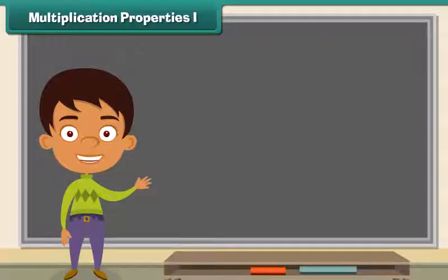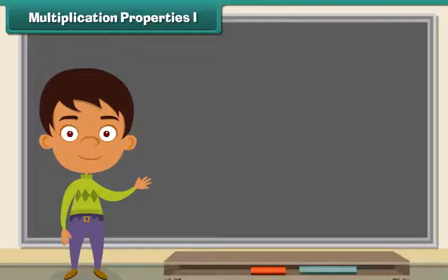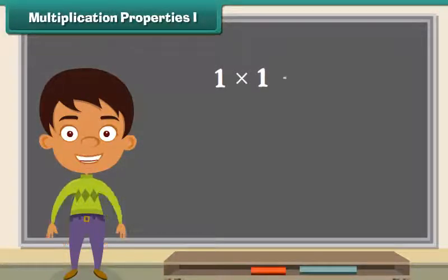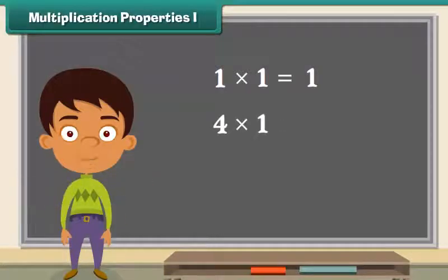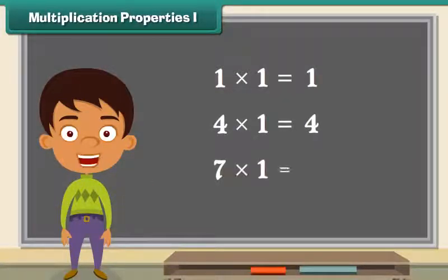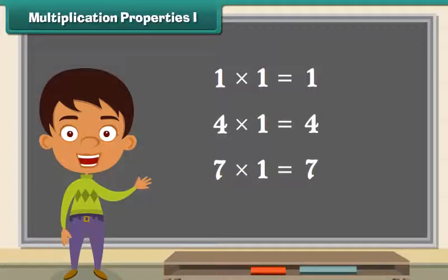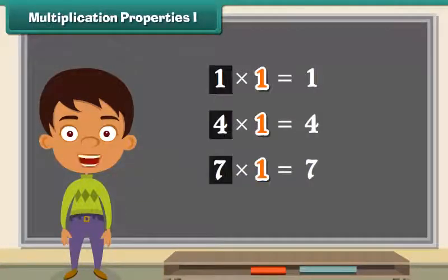Multiplication properties. Let us now look at some properties of multiplication. 1 into 1 is equal to 1, 4 into 1 is equal to 4, 7 into 1 is equal to 7. It means if we multiply any number by 1, the result is the number itself.